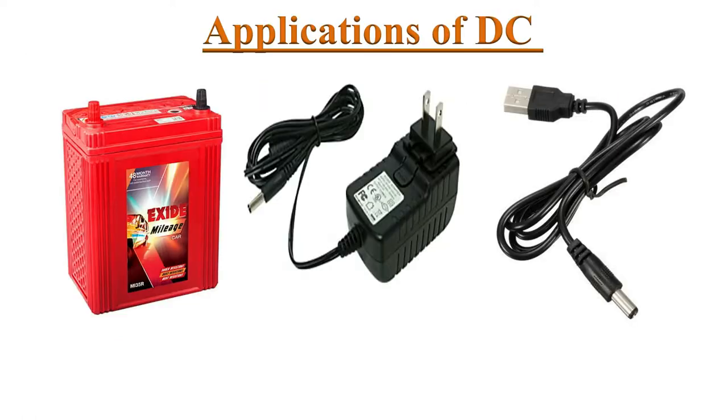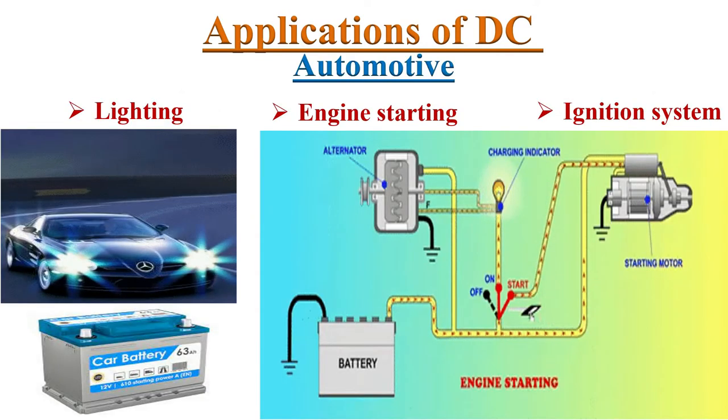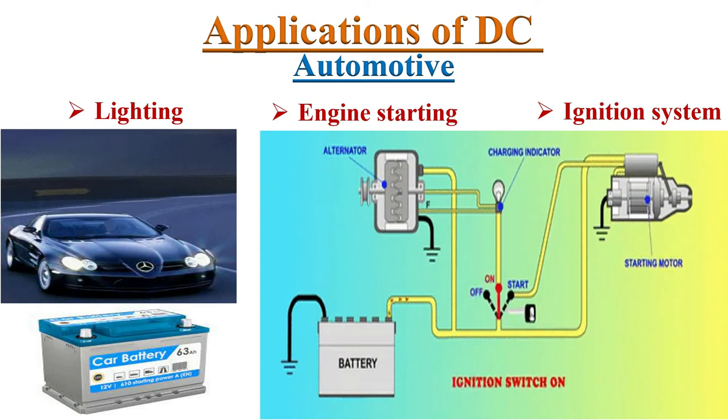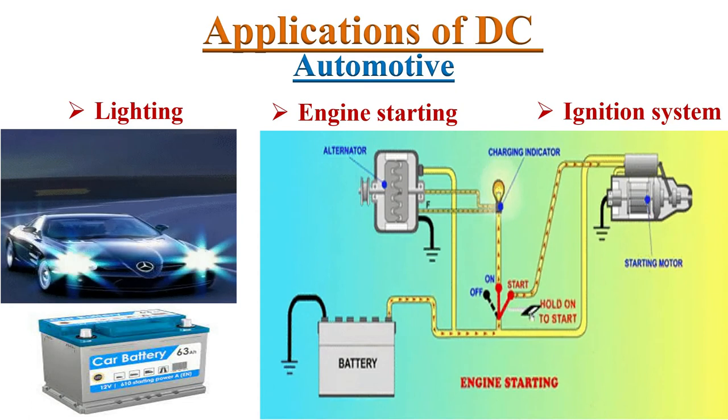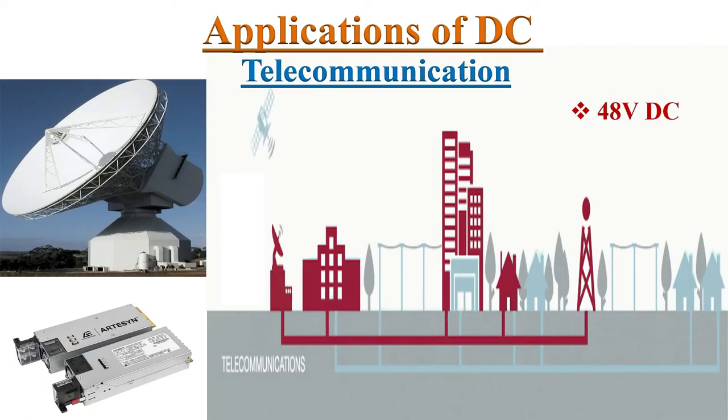Direct current is used in almost all electronic equipments. Everything that runs on a battery or uses an AC adapter for power or uses a USB cable for power relies on direct current. Most automotive applications uses direct current. An automotive battery provides power for engine starting, lighting and ignition system.